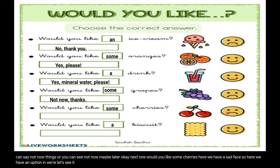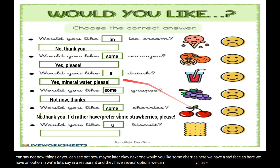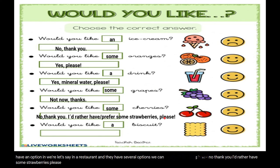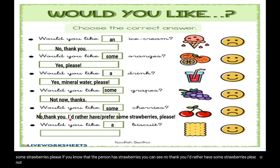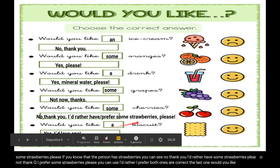'Would you like some cherries?' — sad face — if you're in a restaurant and they have other options, you can say: 'No, thank you, I'd rather have some strawberries please' — if you know the person has strawberries. Or: 'No, thank you, I'd prefer some strawberries please.' You can use 'I'd rather' or 'I'd prefer' — both are correct.